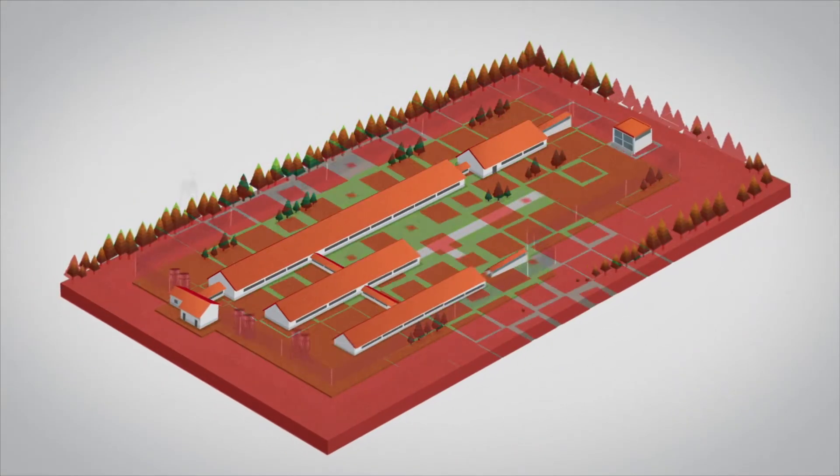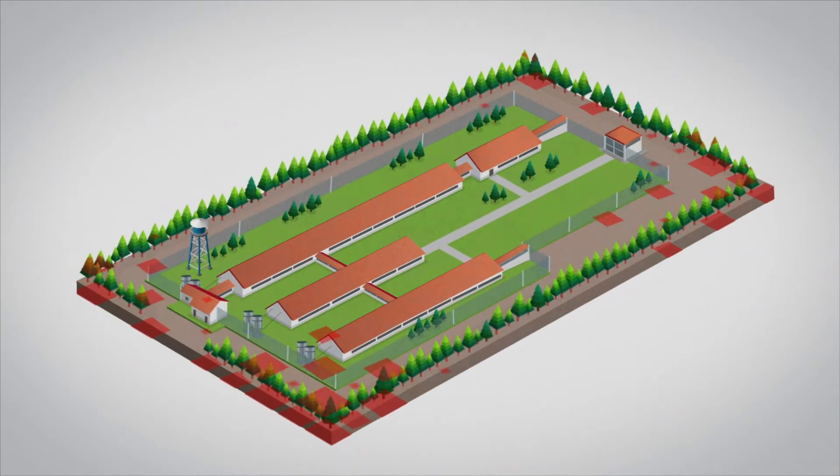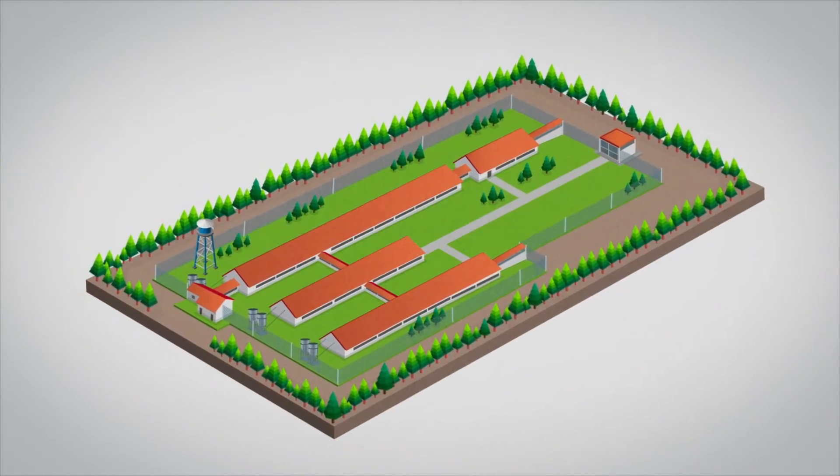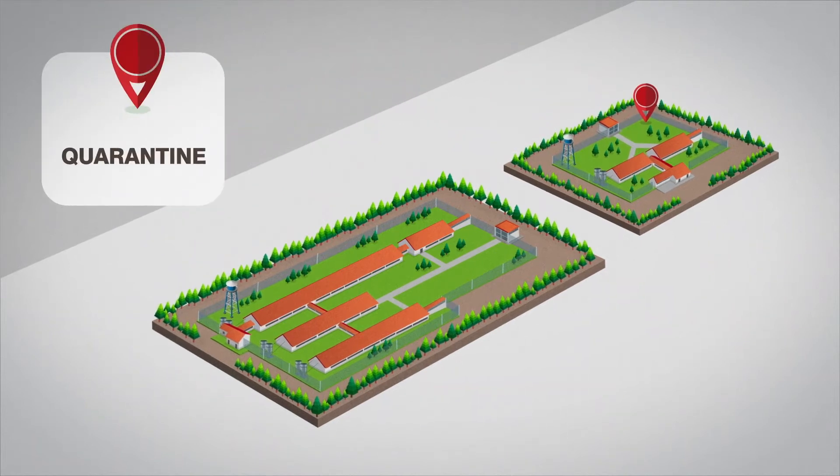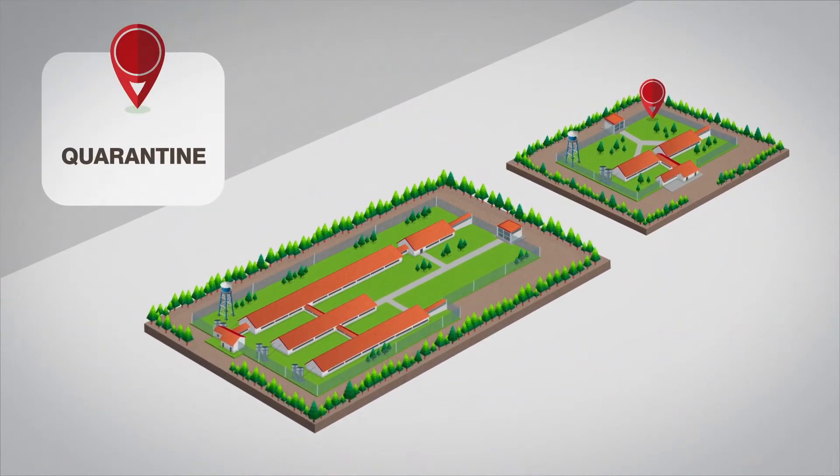Everything outside of the demarcated perimeter is considered the dirty area. That includes the quarantine, where replacement animals are received, observed, and tested before introduction.